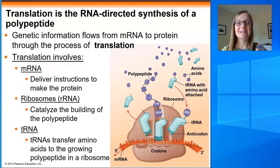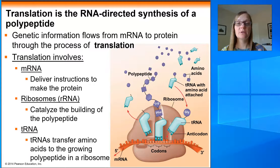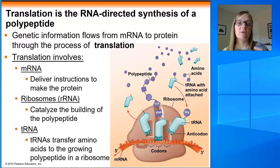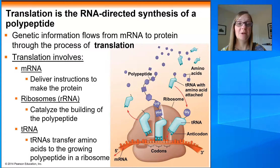Once the mRNA is complete, we are ready for translation. We're going to use the information encoded in the mRNA and a ribosome to read that information, bring in and stitch together the correct amino acids in the correct sequence to make a polypeptide, which will then fold and become a fully functioning protein.